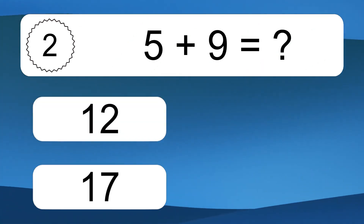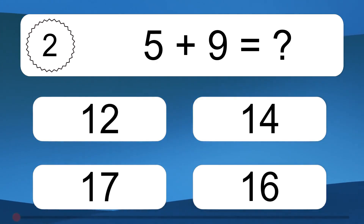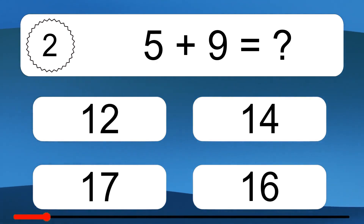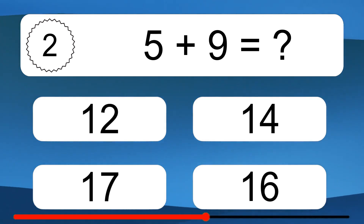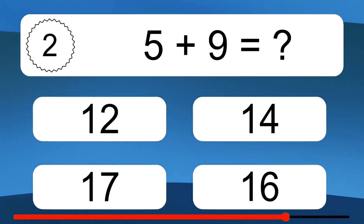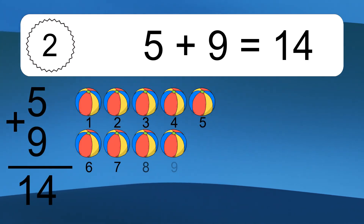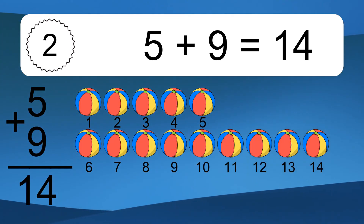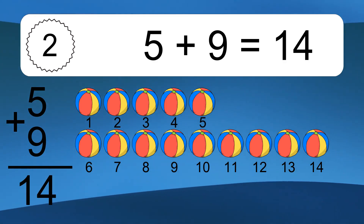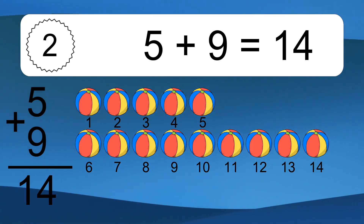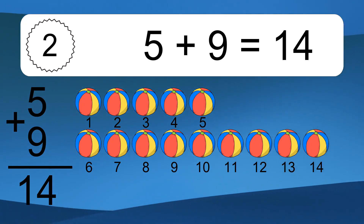5 plus 9 equals what? 5 plus 9 equals 14. Let's count it: 1, 2, 3, 4, 5, 6, 7, 8, 9, 10, 11, 12, 13, 14.